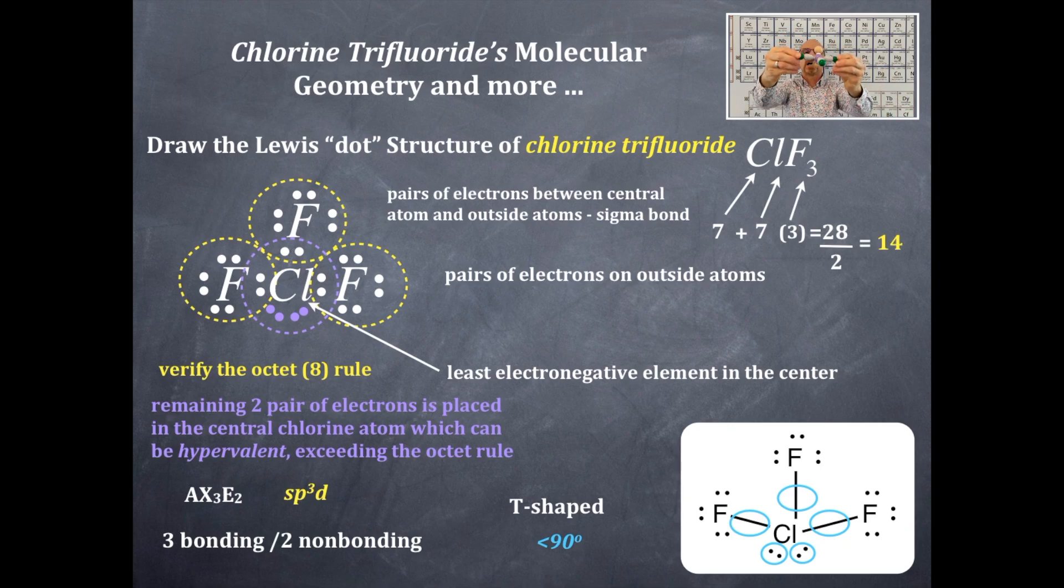This is the T-shape. Hopefully you see the T-shape. There are two sets of lone pairs of electrons on the central region, that's right there. And then there are three sets of bonding.